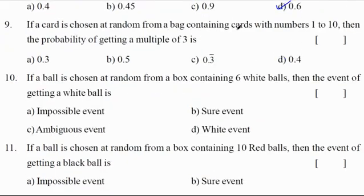If a card is chosen at random from a bag containing cards with numbers 1 to 10, the probability of getting multiples of 3: multiples of 3 from 1 to 10 are 3, 6, 9. So favorable outcomes are 3, total outcomes are 10. 3/10 = 0.3. Correct option A.